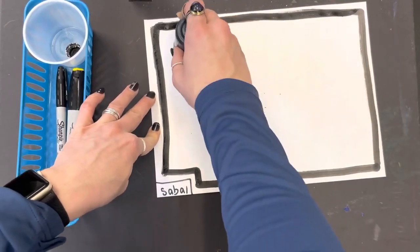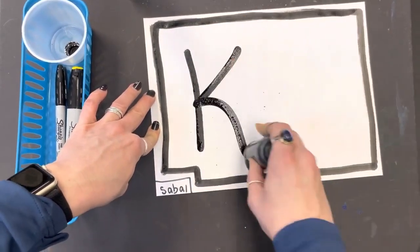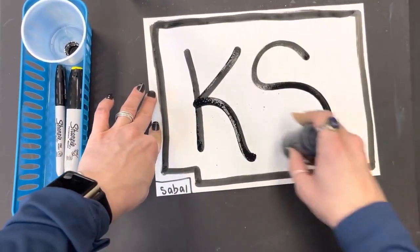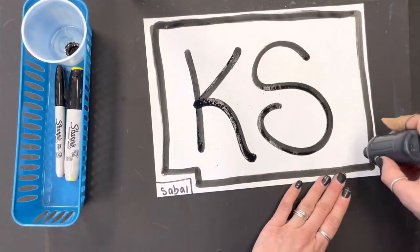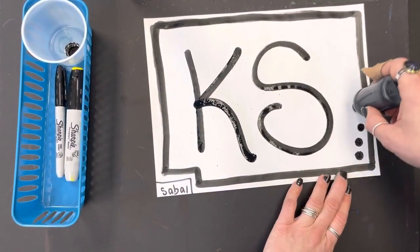Next, you're going to go ahead and write your initials. It's the first letter of your first name and the first letter of your last name. We're going to go back in another day and paint these after they're dry.